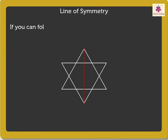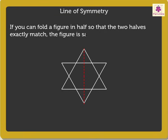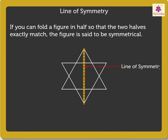If you can fold a figure in half so that the two halves exactly match, the figure is said to be symmetrical. The fold line is called the Line of Symmetry or Axes of Symmetry.